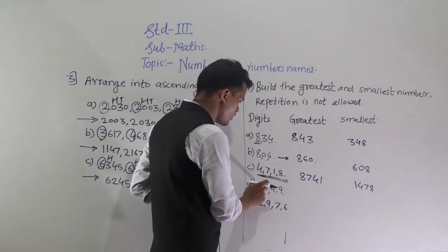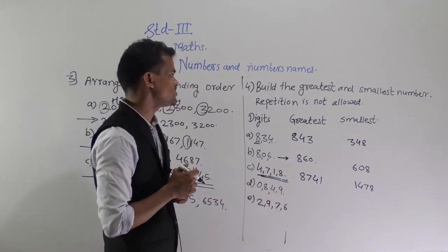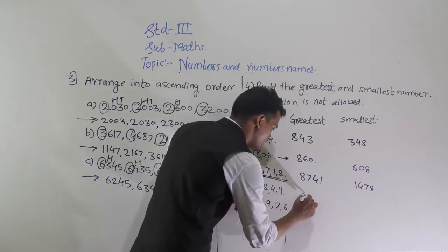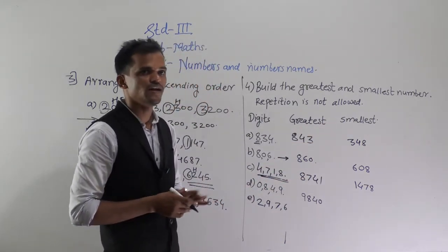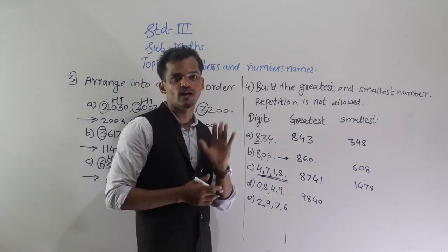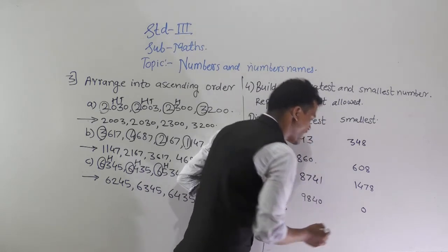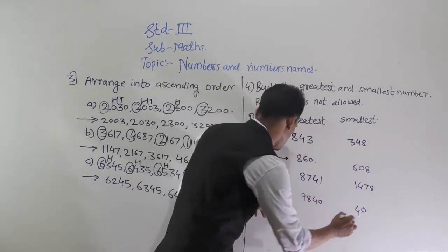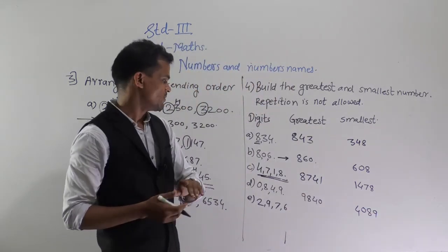Next, using digits 0, 8, 4, and 9: to form the greatest number, arrange in decreasing order — 9, 8, 4, and 0, giving 9840. For the smallest number, one digit is 0 so we cannot put it at the first position. Write 0 at the second position and arrange the remaining digits in ascending order: 4, 8, and 9. So 4089 is the smallest number formed.